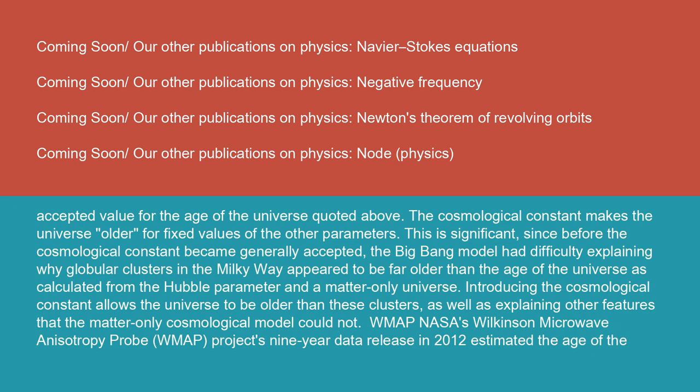The cosmological constant makes the universe older for fixed values of the other parameters. This is significant, since before the cosmological constant became generally accepted, the Big Bang model had difficulty explaining why globular clusters in the Milky Way appear to be far older than the age of the universe as calculated from the Hubble parameter in a matter-only universe. Introducing the cosmological constant allows the universe to be older than these clusters, as well as explaining other features that the matter-only cosmological model could not.